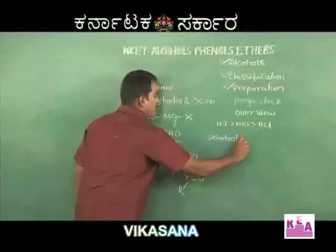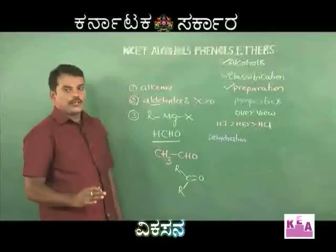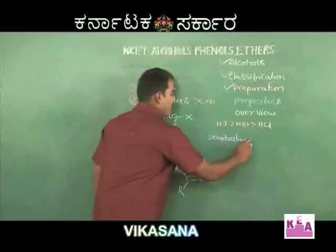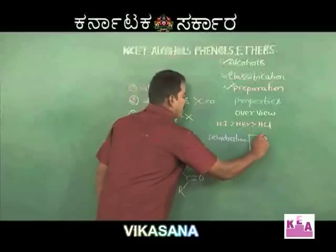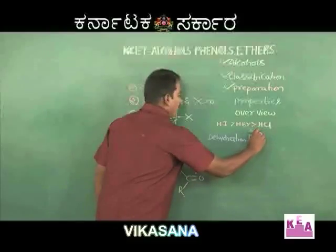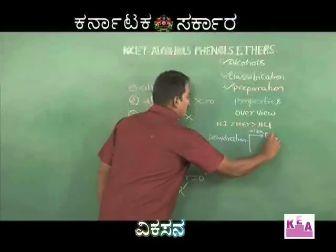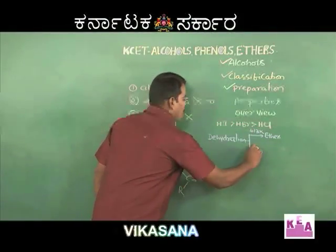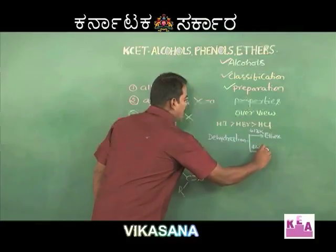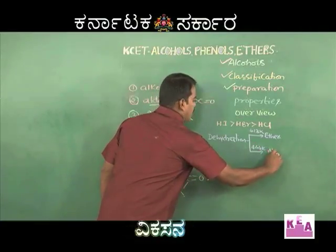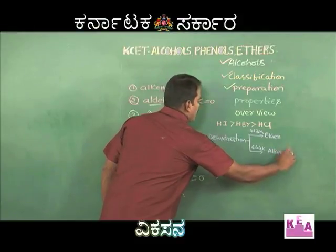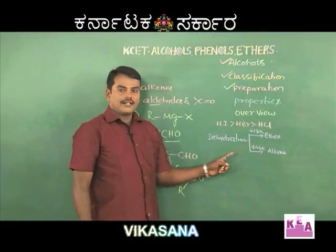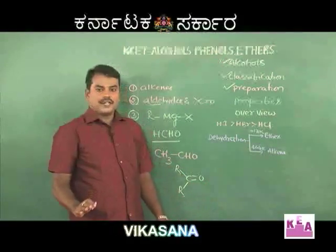Dehydration of alcohols takes place in two different ways depending on the temperature maintained. If dehydration occurs at 413 K, ethers are the product. If the temperature is 444 K, you get alkene as the product. The dehydrating agent is concentrated H₂SO₄.